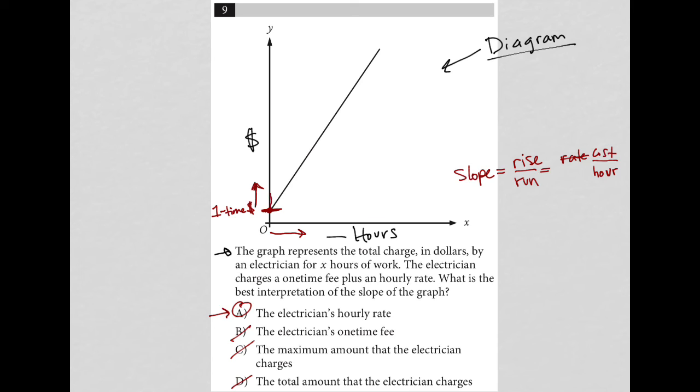Right? We just care about if I go up and over one, which is what I think about with slope, what does that represent, right? It's like however much the electrician is charging per one hour. My rise is the charge. My run is the hour. So that's the rate. So the answer is choice A here.